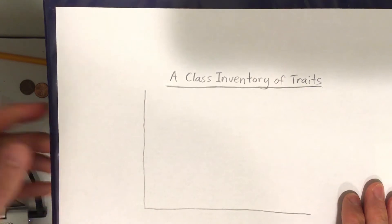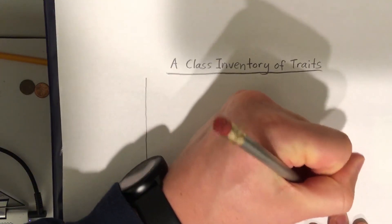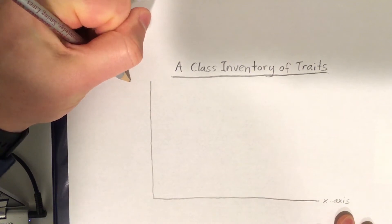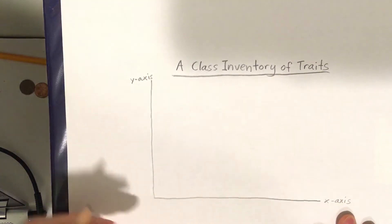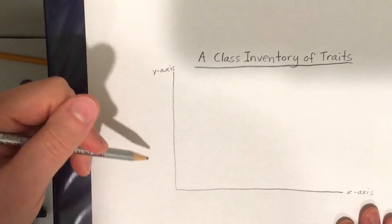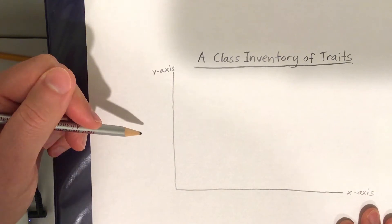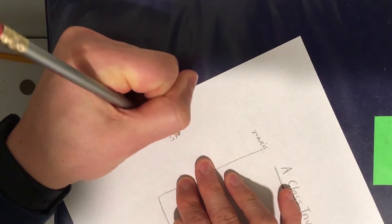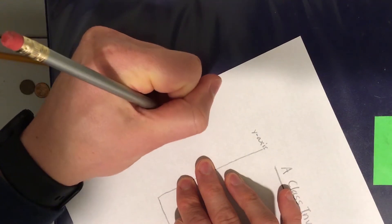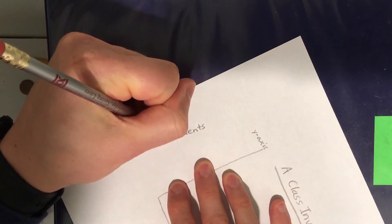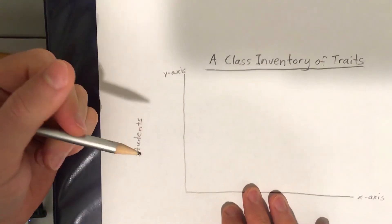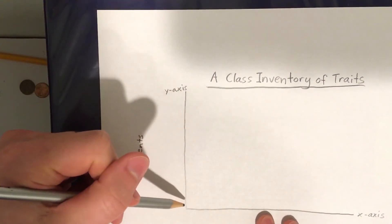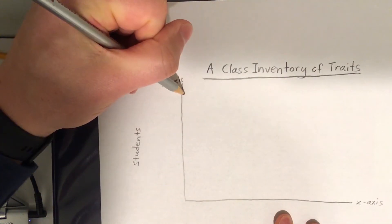And since only 37 of you have submitted your results that means a lot more people need to finish. But this is going to be a graph of the students that have done it so far. Okay? So a class inventory of traits. And what we are going to do is we're going to remember that this is the X axis. So let's label this X axis. And this one is the Y axis. So Y axis goes here. We are going to number the students on the left side. So we are going to label the left side of the graph students.